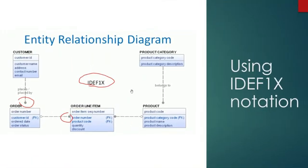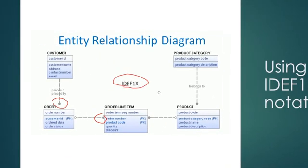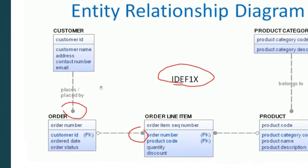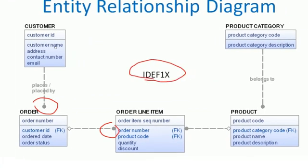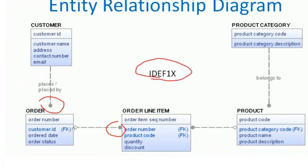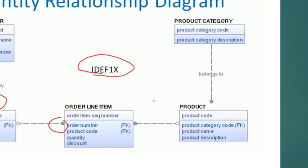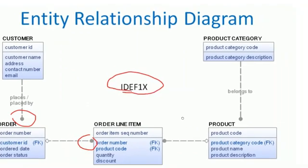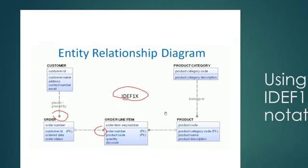The next notation we will see is IDF1X notation. The same entity relationship model is represented using IDF1X notation, but there is no Crowfoot notation here — it has its own style. The customer places orders, orders are placed by customers, and an order has multiple order line items. This is how an entity relationship model is represented using IDF1X notation.